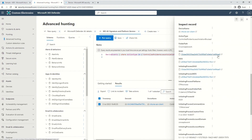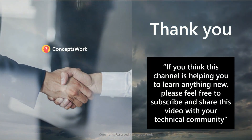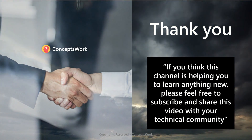That was all about how controlled folder access can be enabled through Microsoft Intune. In this video, we discussed enabling controlled folder access through Intune, creation of an endpoint security policy, adding protected folders, and whitelisting applications to access a protected folder. We also discussed how to check logs and review events on the MDE Portal. In the next video, I'm going to talk about network protection. If this channel is helping you learn something new, please subscribe and share this video with your technical community. Thank you so much.